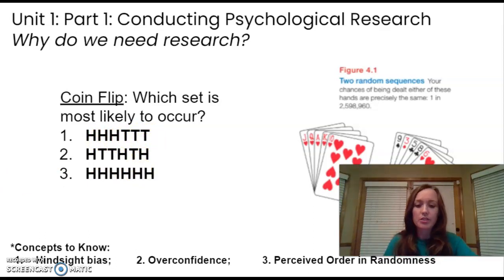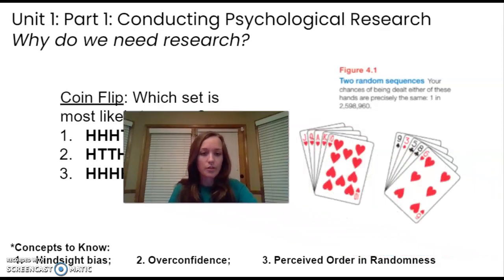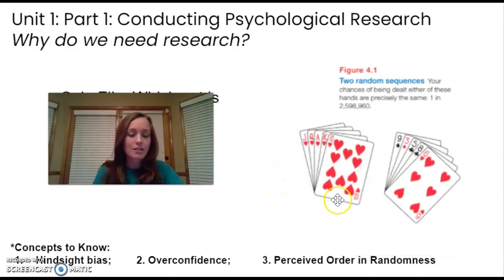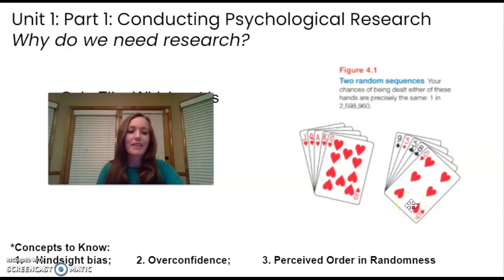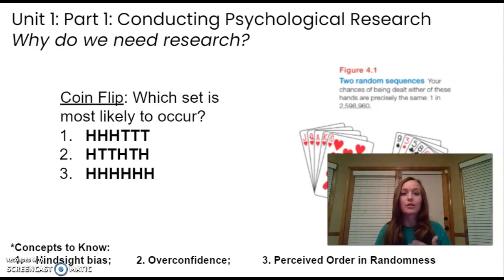We have a tendency to think patterns are happening when something is actually random. Another good example is figure 4.1 — two random card hands — and your chances of being dealt either hand are the same, even though one looks more 'orderly.' Hindsight bias, overconfidence, and our tendency to perceive patterns in random events lead us astray and cause us to overestimate our intuition — that's why we need scientific inquiry.